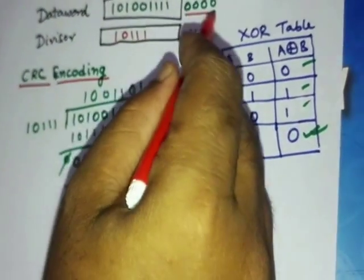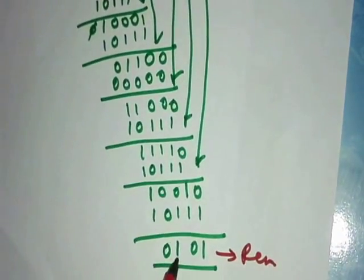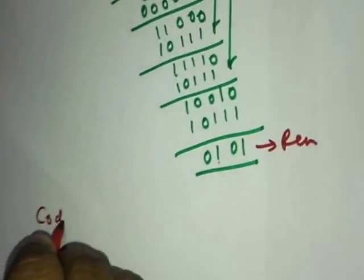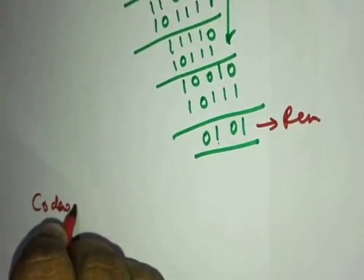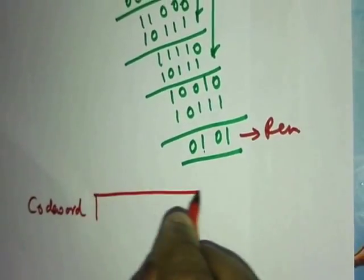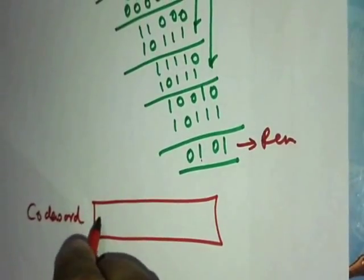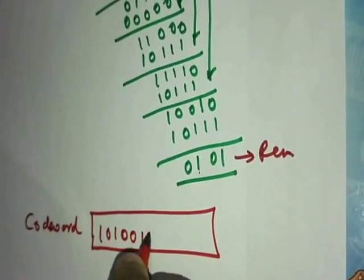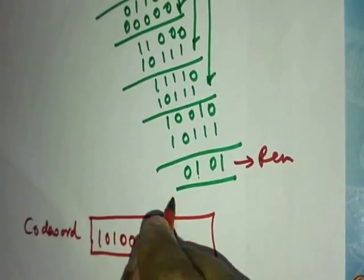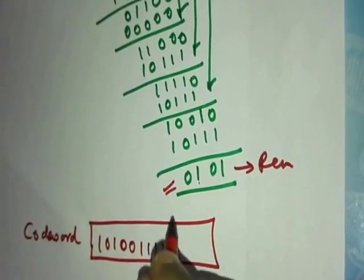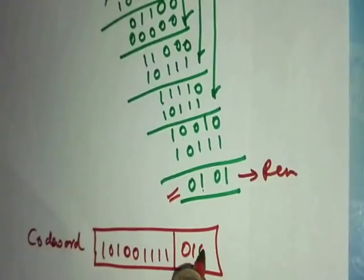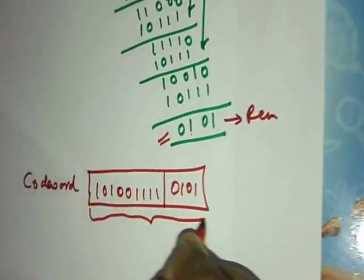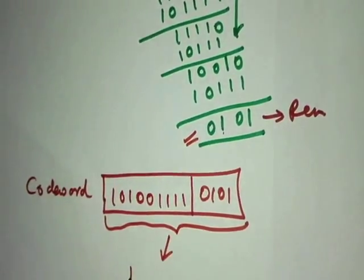So this is my remainder: 1 0 1 0. What I am going to do is append this remainder to the data word. So instead of the four zeros we write 0 1 0 1. My new code word comprises the data word — 1 0 1 0 0 1 1 1 — and the remainder — 0 1 0 1.